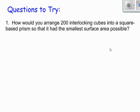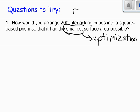How would you arrange 200 interlocking cubes into a square base prism so that it had the smallest surface area possible? Well, first of all, the word smallest should trigger an alarm in your brain. Smallest is like minimizing, and therefore, this is a question of optimization. So, we are trying to optimize something. And the thing that we're optimizing are tiny little cubes that lock together, and you can create all kinds of funky shapes. Optimizing with cubes.